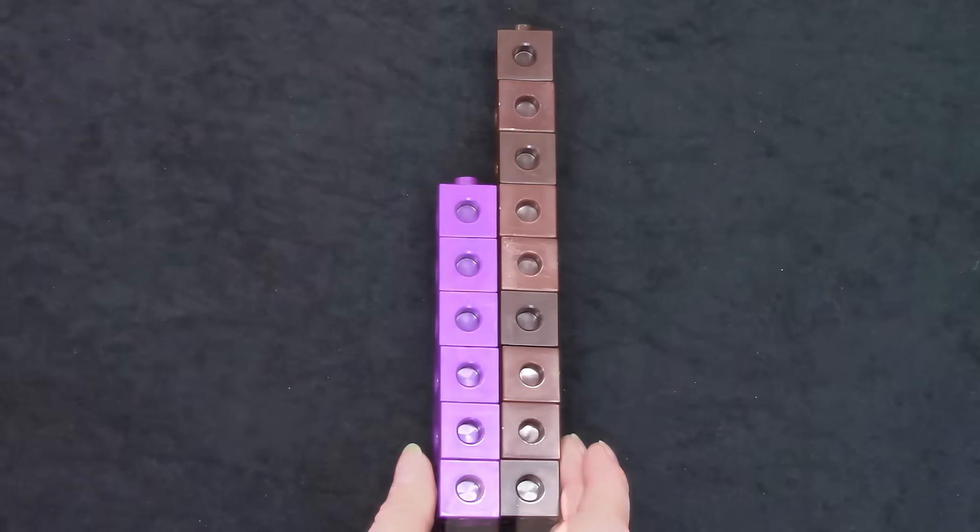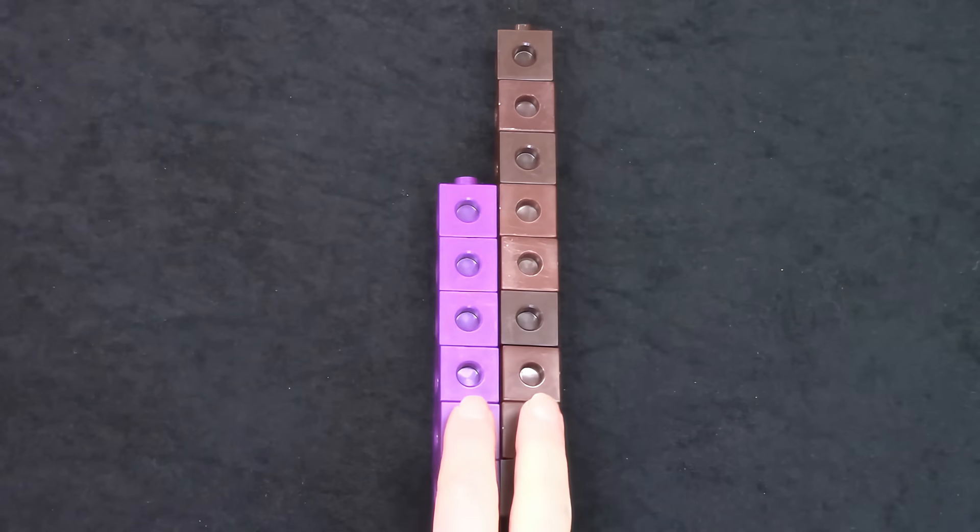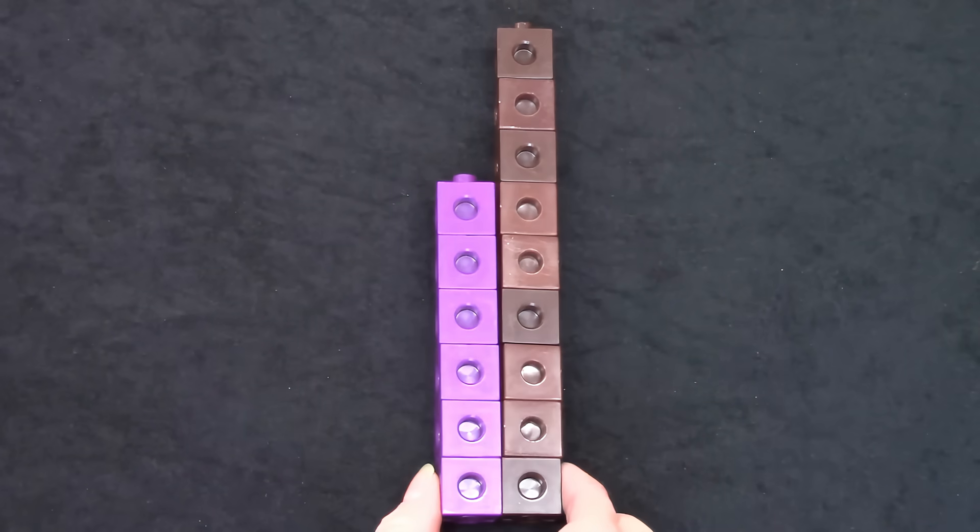We can see how many more blocks are in the brown tower when we put them together. The first 6 blocks, 1 2 3 4 5 6, have a partner.